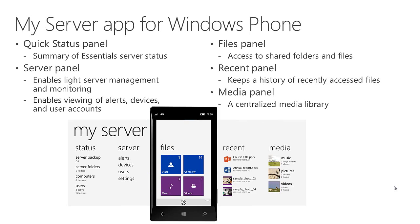On the phone you have a quick status panel showing a summary of the server status. You can do some light server management tasks — view your alerts, devices, and user accounts, and reset passwords. The files panel gives access to shared folders and files. There's a panel for recent activities, keeping track of things you've used recently. The Windows Phone app also lets you access streaming media — if you've installed that optional component, you can use your phone to remotely stream music or video right to your phone.